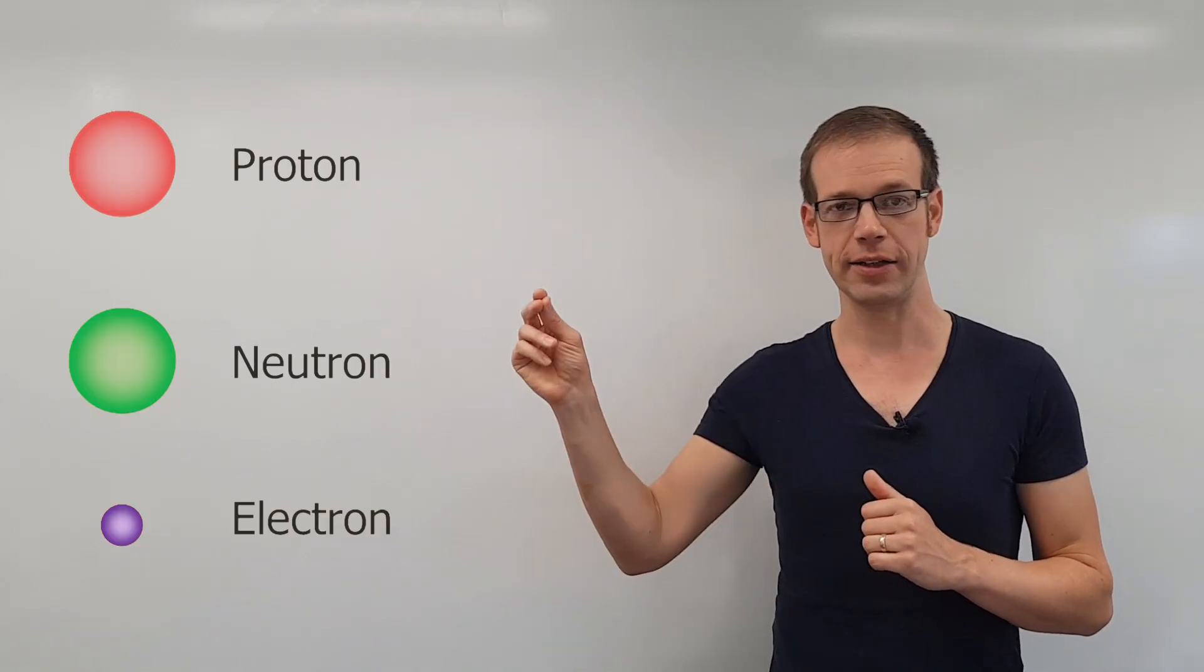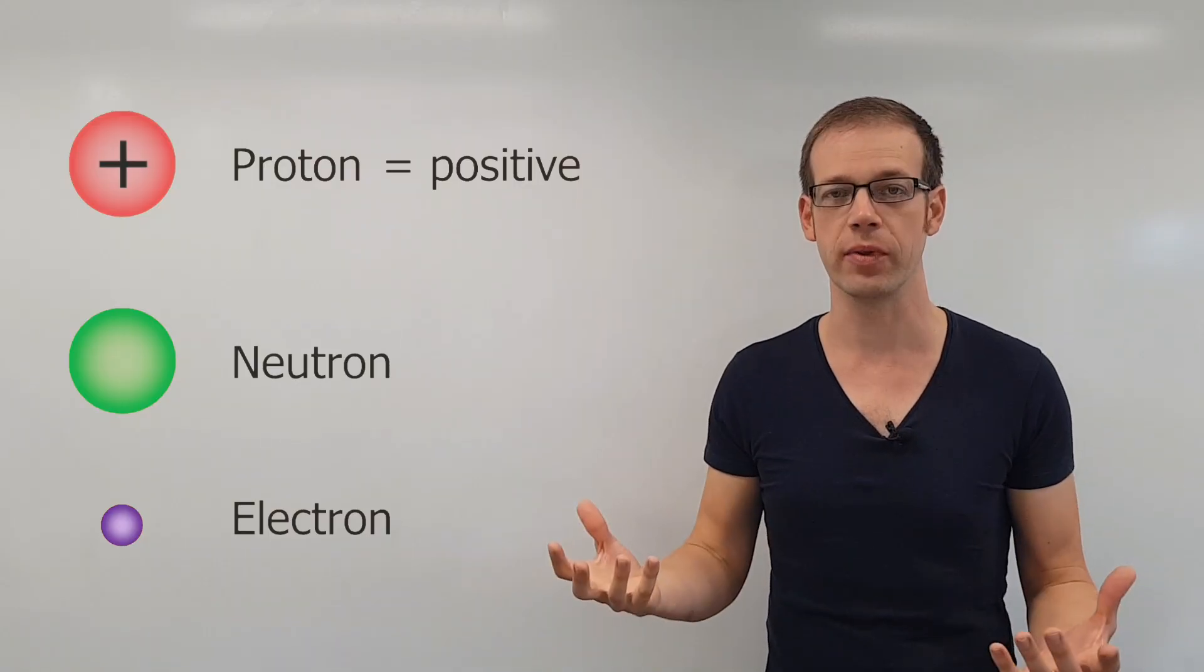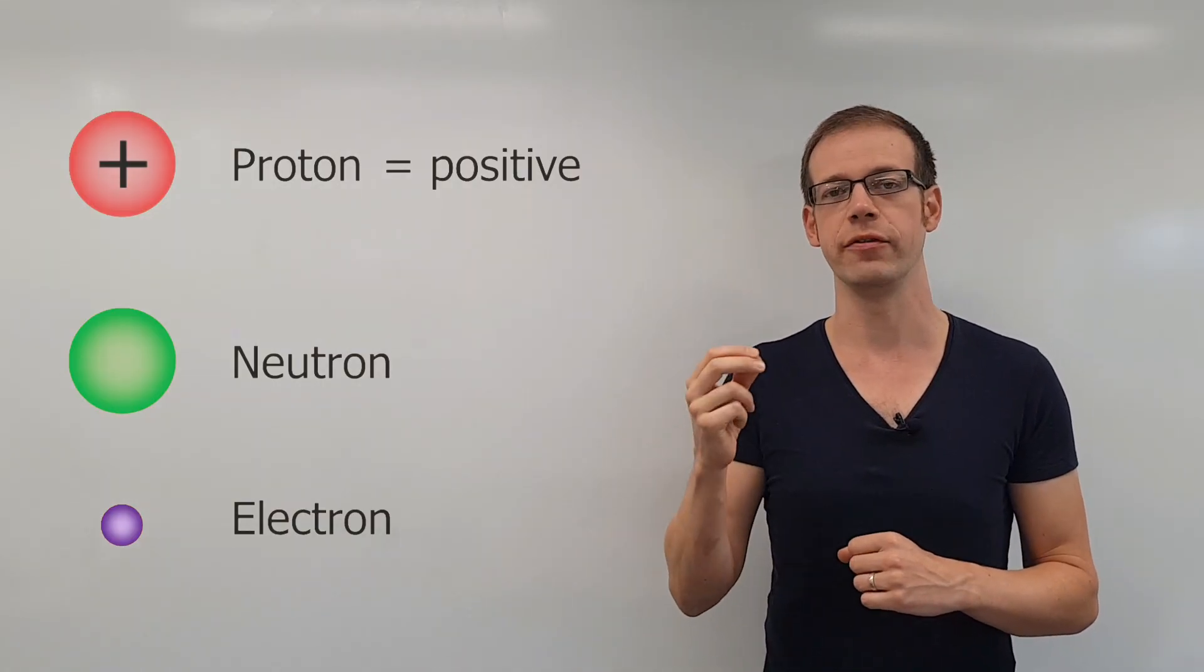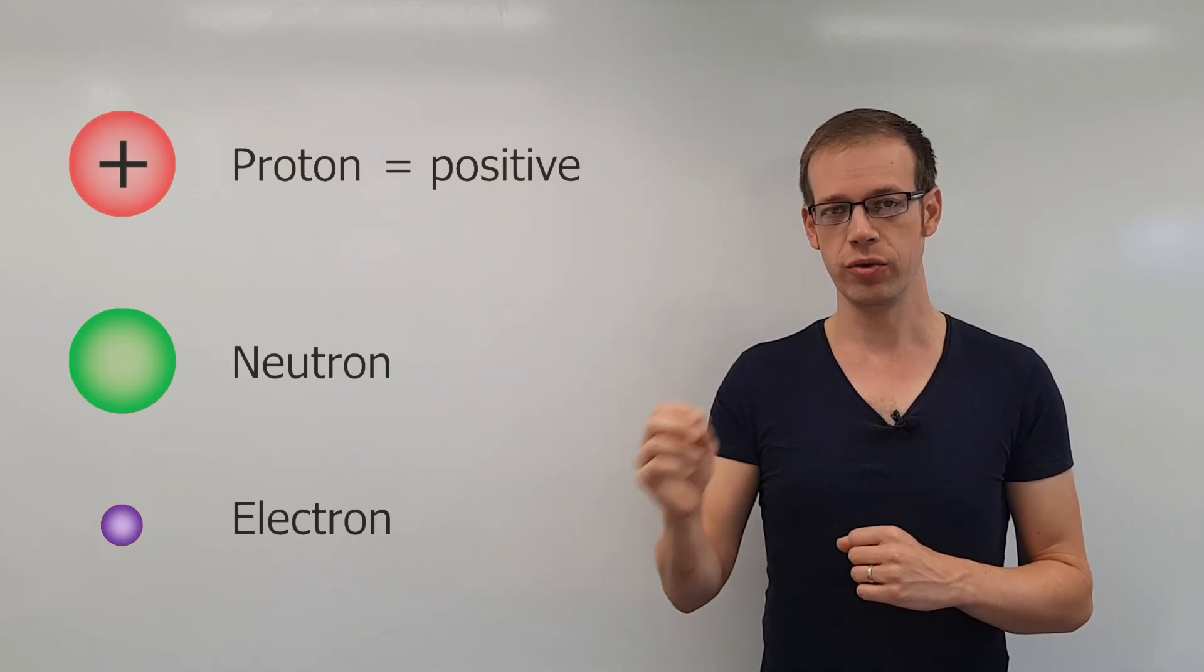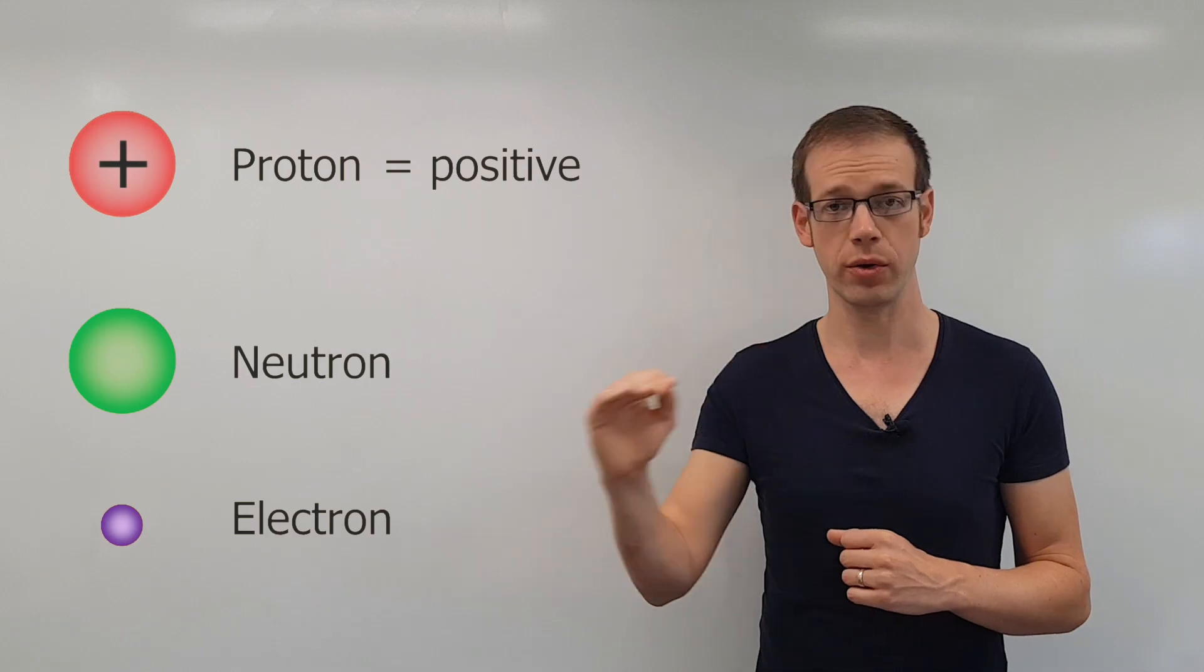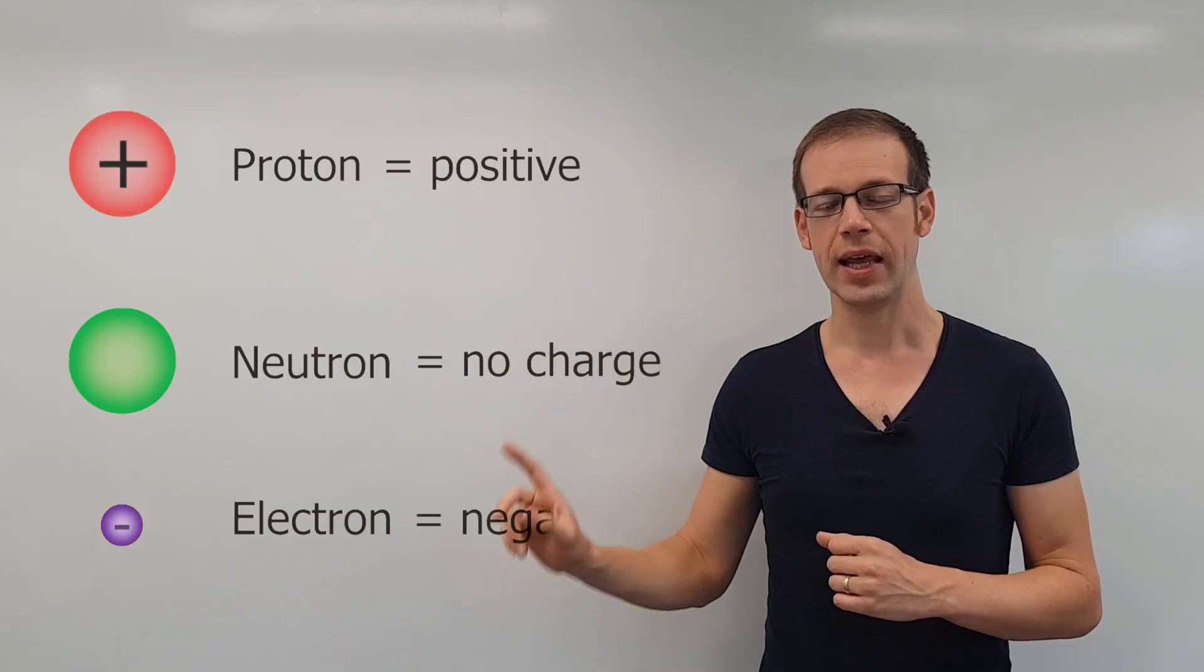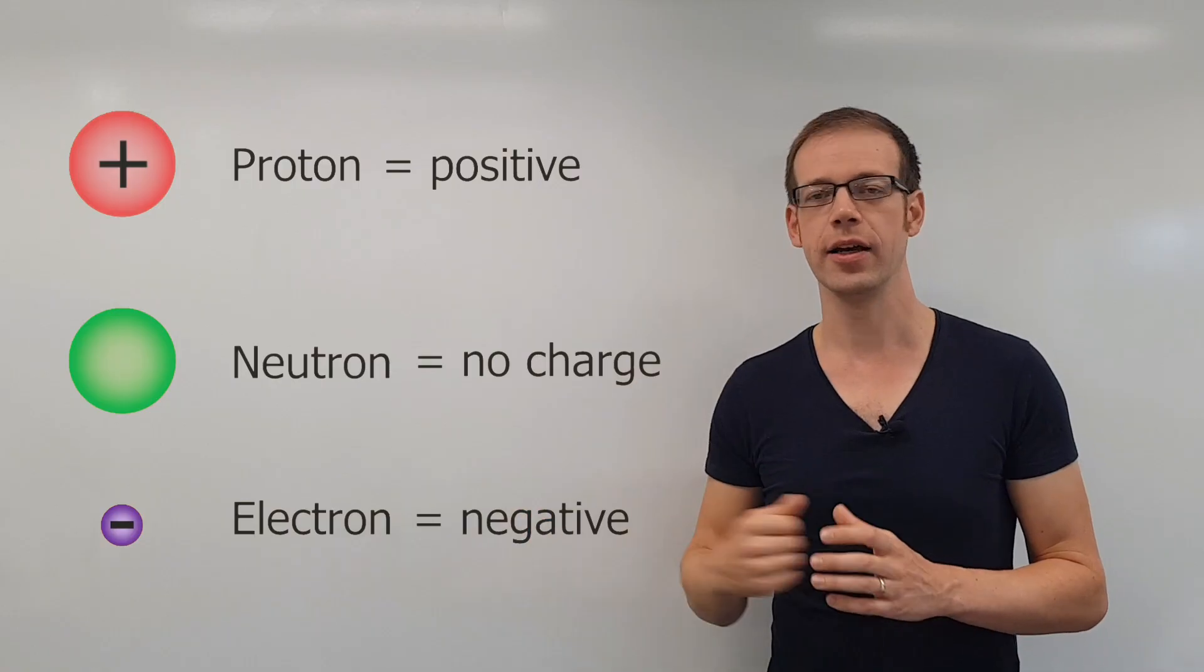Protons are positive. The way to remember this is if you are 'pro' something, it means you are for it, which means that it is positive—you are positive about it. So a proton has a positive charge. A neutron has a neutral charge—it's almost the same word, neutral, neutron—it has no charge. And then finally we have the electron. The electron has a negative charge, and it's the electron that we're particularly interested in because that's what we call the seat of electricity.